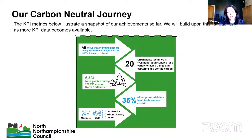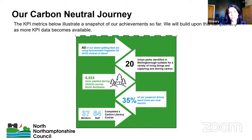This slide illustrates a snapshot of our carbon neutral journey to date, highlighting key achievements. 100% of our gritting fleet is now using Hydrotreated Vegetable Oil instead of diesel. We have identified 20 urban parks in Wellingborough for carbon storage. We have planted over 6,000 trees across North Northamptonshire. Within Highways, 35% of power-driven hand tools are now electric rather than petrol or diesel. Lastly, 37 members and 64 officers have now completed a carbon literacy course.